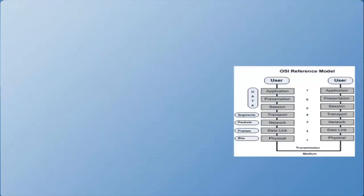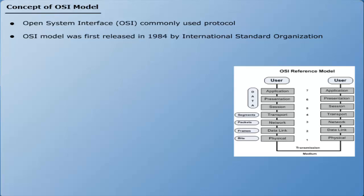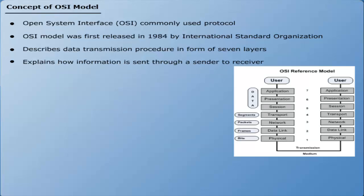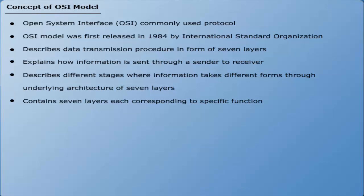The most important network protocol is OSI. The Open System Interconnection (OSI) model is the most commonly used protocol in network communication. It was first released in 1984 by the International Standards Organization (ISO). It describes data transmission in the form of seven layers, explaining how information is sent from sender to receiver through an underlying architecture. The OSI model consists of seven layers: physical, data link, network, transport, session, presentation, and application.